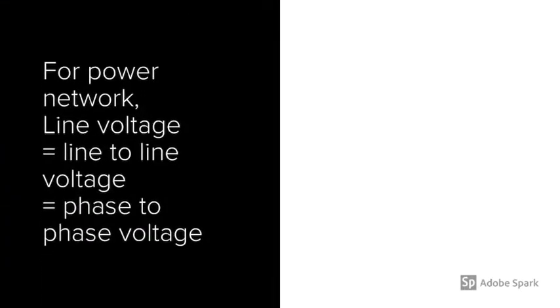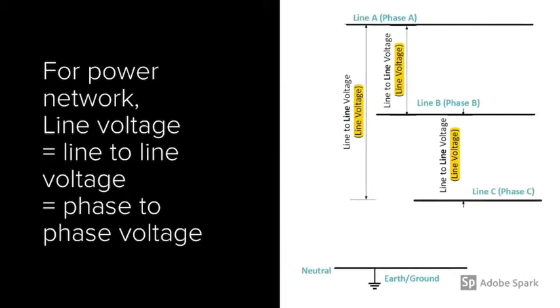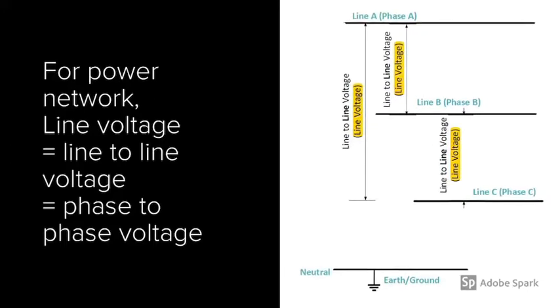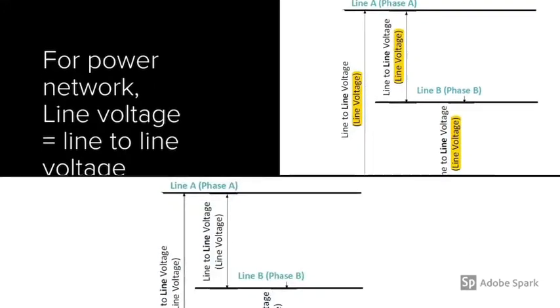For power network, line voltage is equal to line-to-line voltage or phase-to-phase voltage. It can be the voltage between line A and line B, or B and C, or A and C.